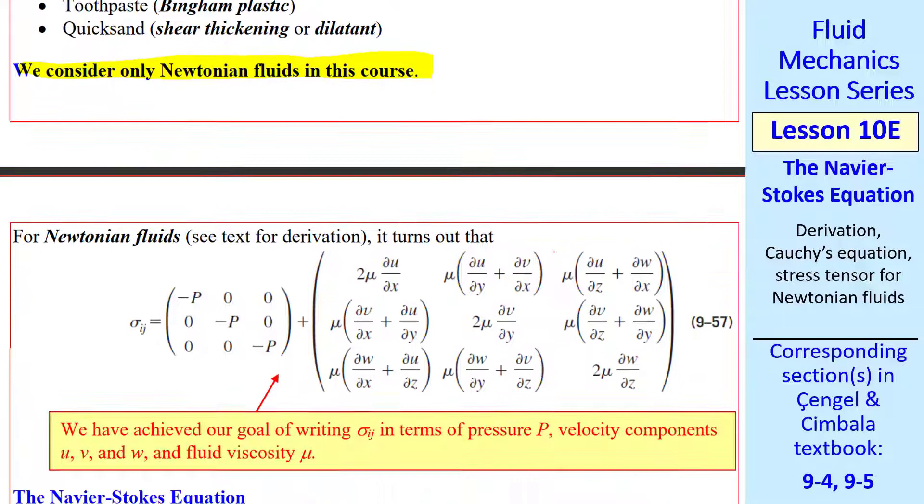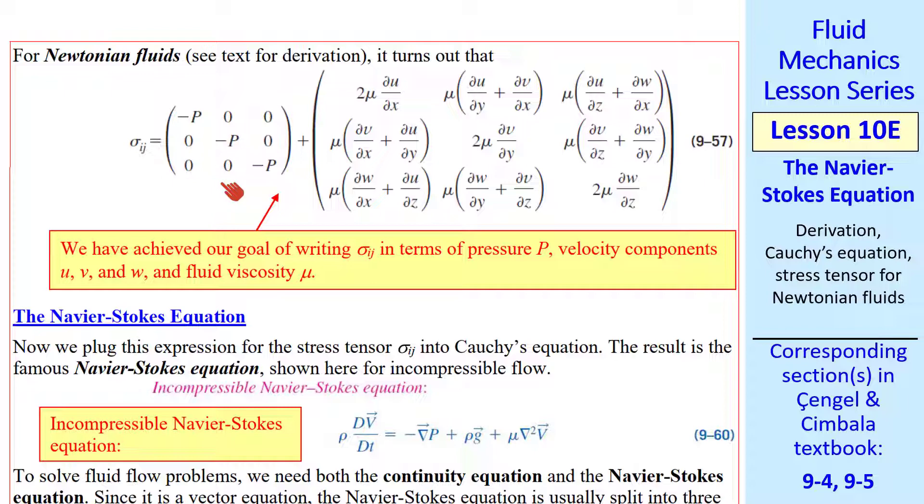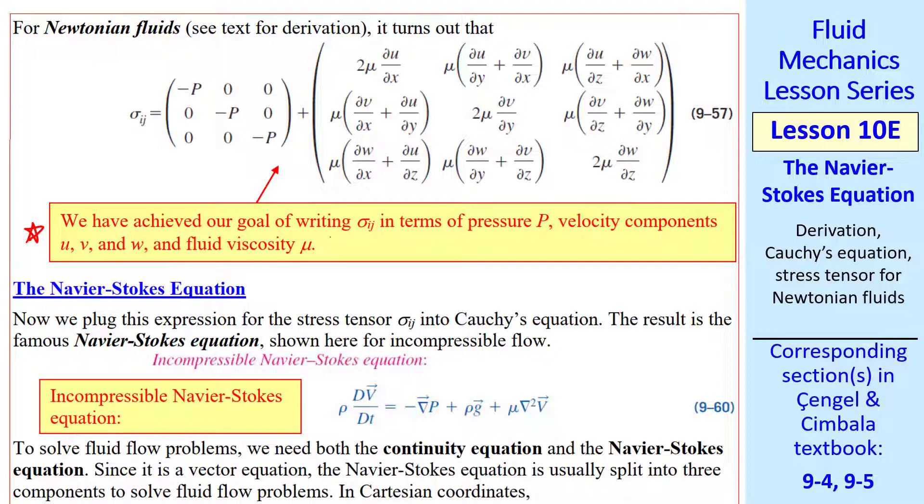We consider only Newtonian fluids in this course. So what is a Newtonian fluid? I won't go through the derivation. It turns out that the stress tensor, which is a second-order tensor with nine components, has two parts. Pressure, which appears only in the diagonal terms and is negative because pressure always acts inward, and then nine components of the viscous stresses, where there are even viscous stresses in the normal components, and then there are shear stresses. As we saw with the strain rate tensor, this tensor is symmetric. These two terms are equal. This term is equal to this term, and these two terms are equal. With this equation for the stress tensor, we have achieved our goal of writing sigma ij in terms of pressure, velocity components, u, v, and w, and fluid property, mu.